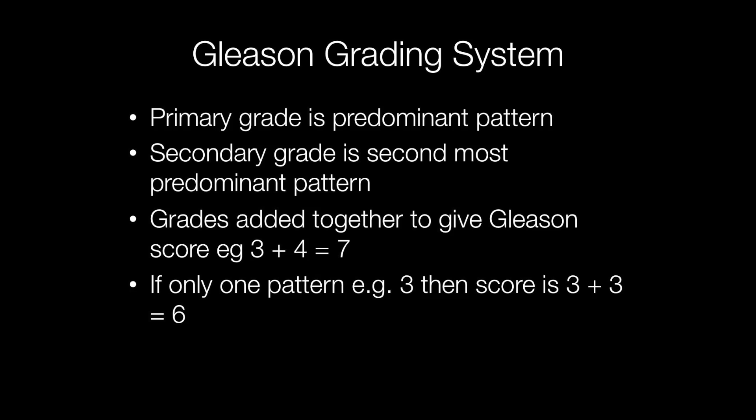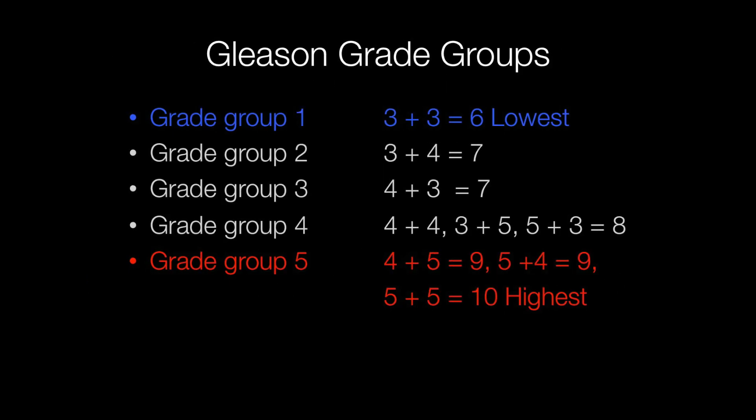With a score of 7, that may be either Gleason 3+4 or 4+3, but the problem is that a patient with a predominant pattern of 3 will do better than a patient with a predominant pattern of 4, despite having the same score of 7. This conundrum was solved by introducing grade groups.